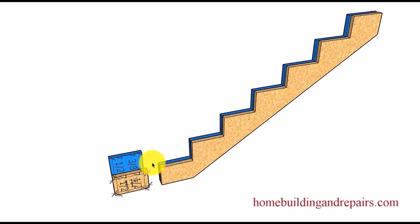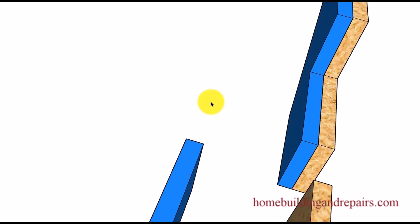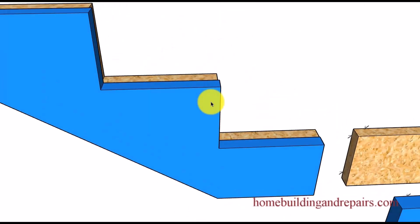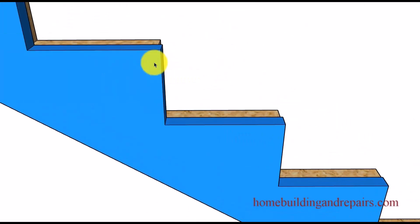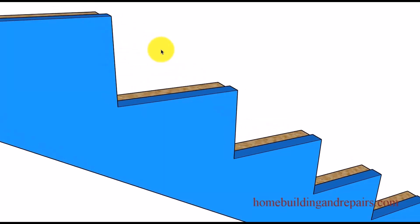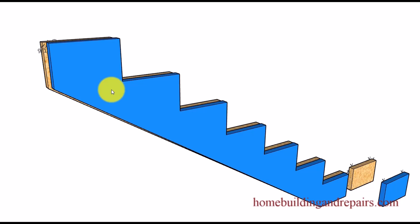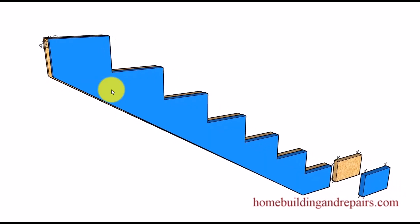In our last example we are going to be reversing the slope, and this is going to provide us with another problem because the stringer length is going to be smaller. However, the treads and risers aren't going to be that much out of whack for level and plumb. We're also going to end up with about nine-sixteenths of an inch difference at the top, instead of the seven-eighths of an inch we were dealing with in the first two examples.